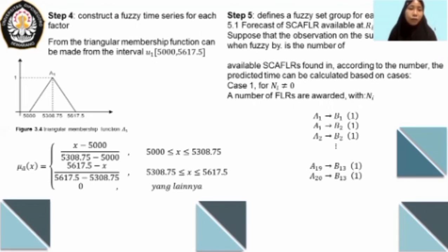Step number four is to construct a fuzzy time series for each factor. As I said before, for each factor means the main factor and the second factor can be made from the intervals as we see on the screen.